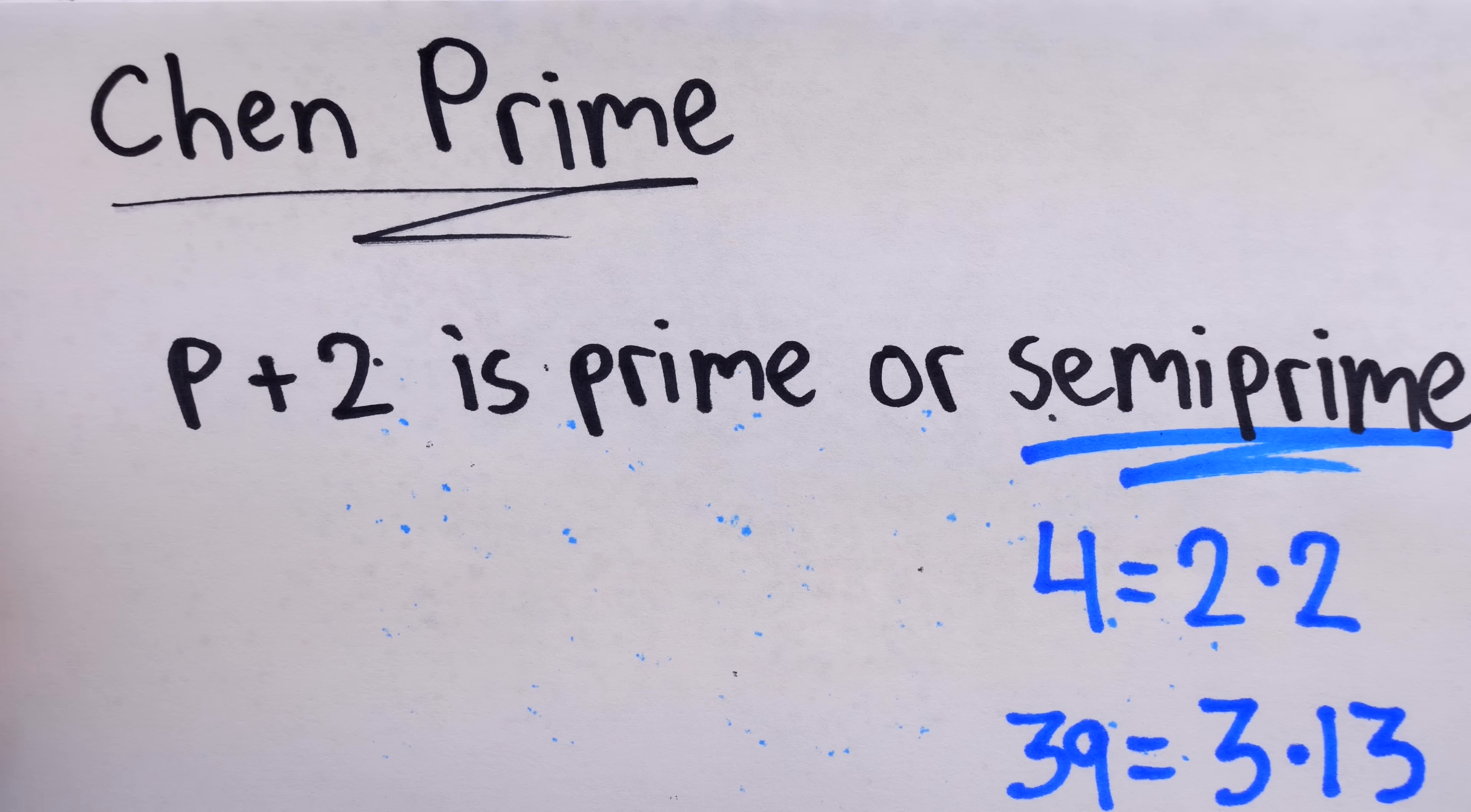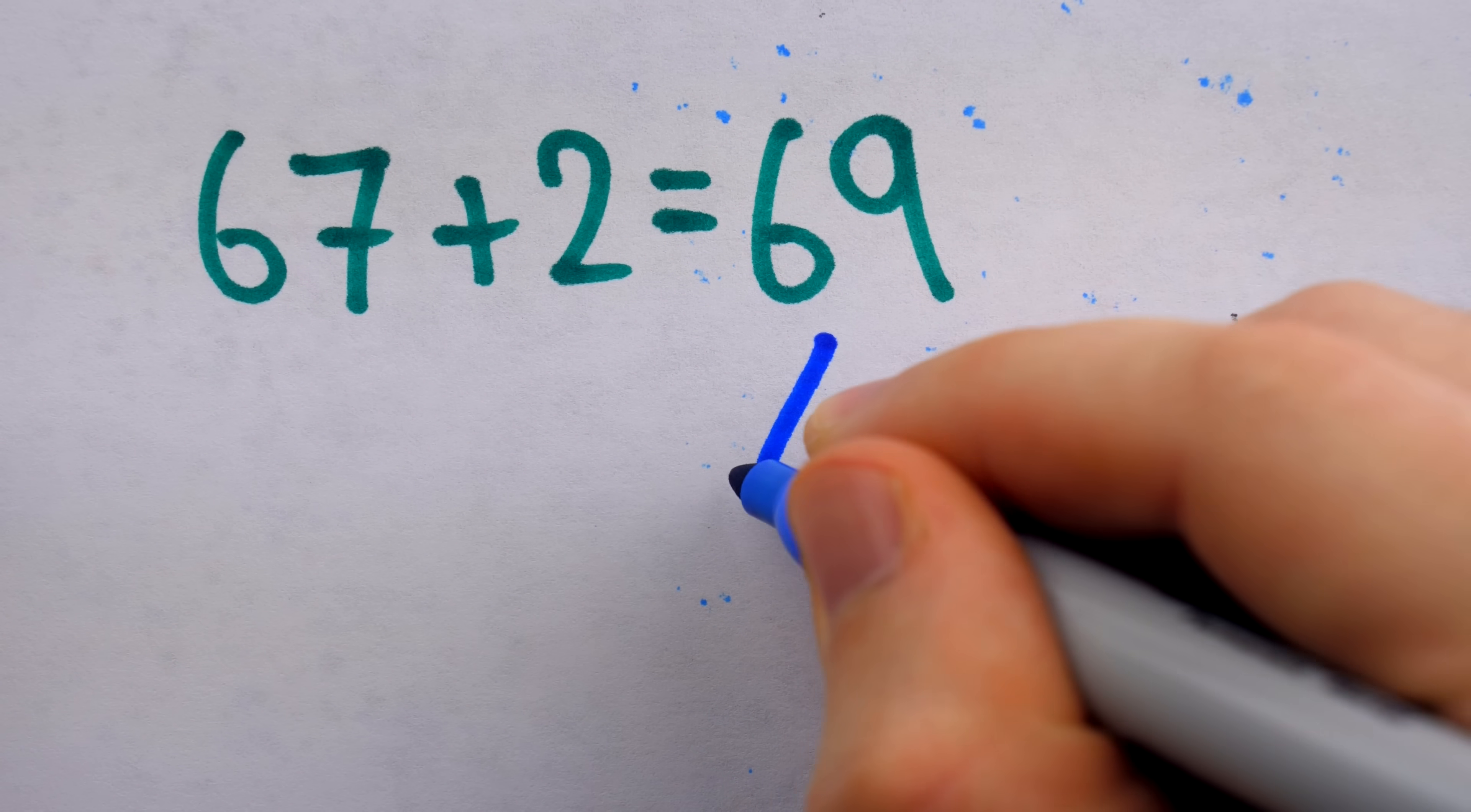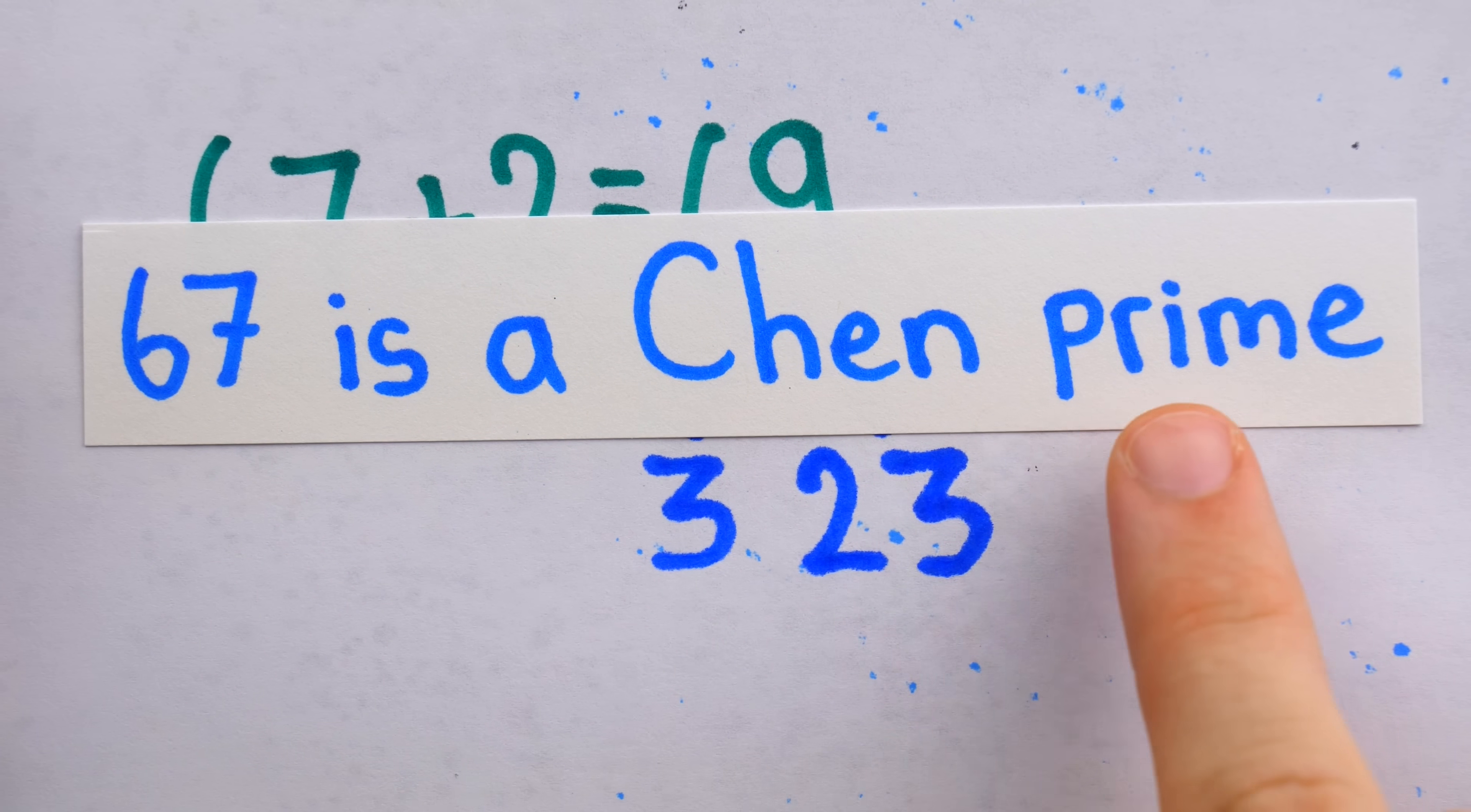So again, to determine if a prime number p is a Chen prime, you have to look at p plus 2. Of course, in the case of 67, that's 67 plus 2, which is the infamous 69. 69 is itself not prime, but it is semiprime because it is the product of exactly two prime factors, 3 and 23. Since 69 is semiprime, we have that indeed 67 is a Chen prime.